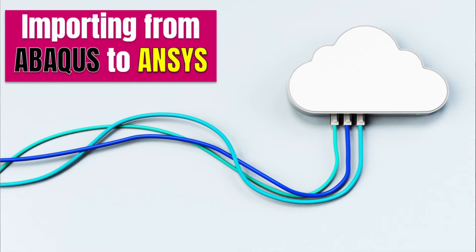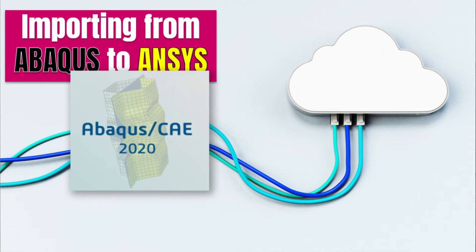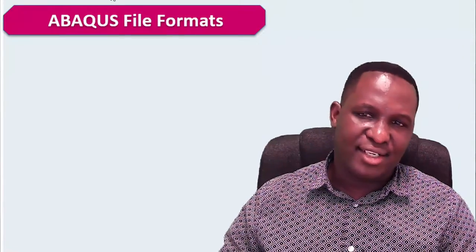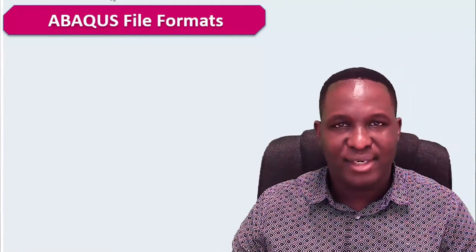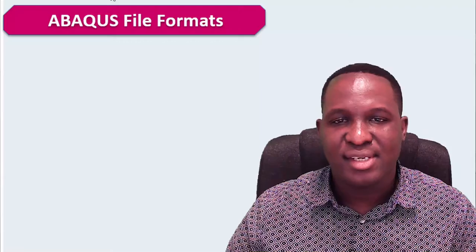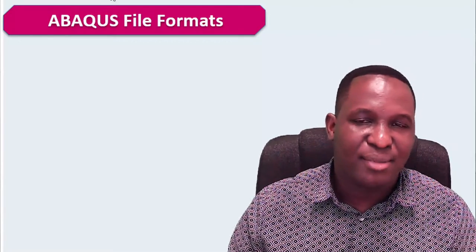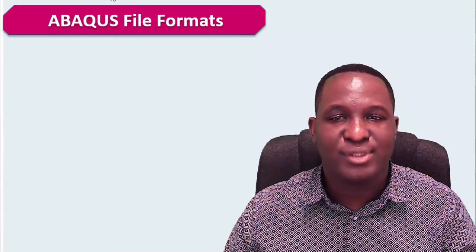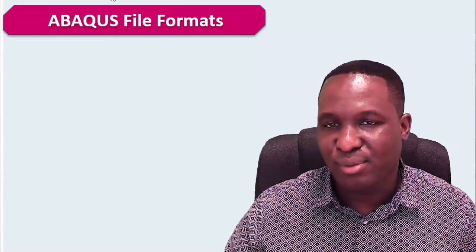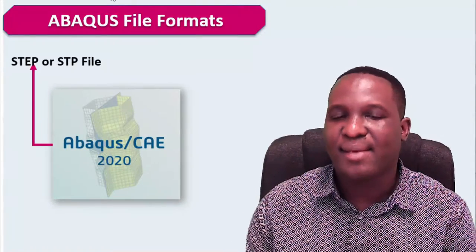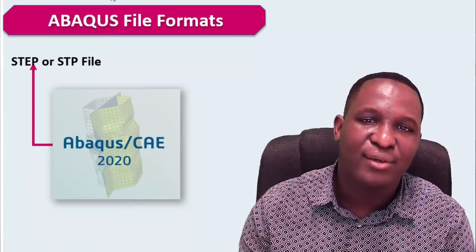The objective here is to import from Abacus to ANSYS — we start with the model in Abacus and ultimately end up in ANSYS. The first thing to understand are the file formats that Abacus uses. There are different CAD file formats within Abacus, and understanding them is really important for being able to import them into ANSYS. The first file format is the STEP file — it's a high-order version of CAD geometry for transferring content from one platform to another.